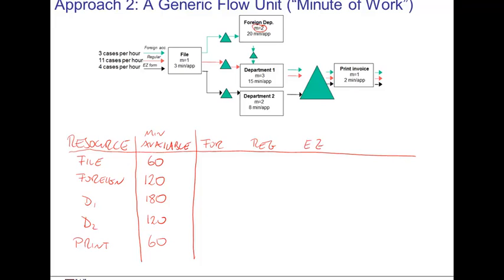Similar to the previous calculations, we'll look at the three flow unit types: the foreign one, the regular ones, and the easy ones. We know at the filing department we have 3 units per hour arriving, each of them will take 3 minutes of work. Regular units, we have 11 units arriving, each of them requiring 3 minutes of work. And the easy ones, we have 4 units arriving every hour, requiring 3 minutes of work each.